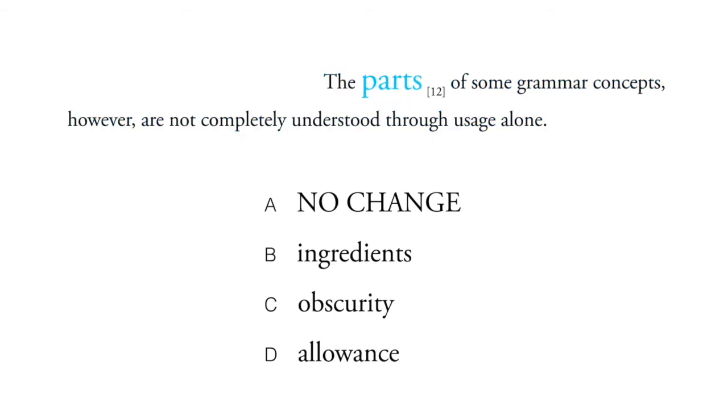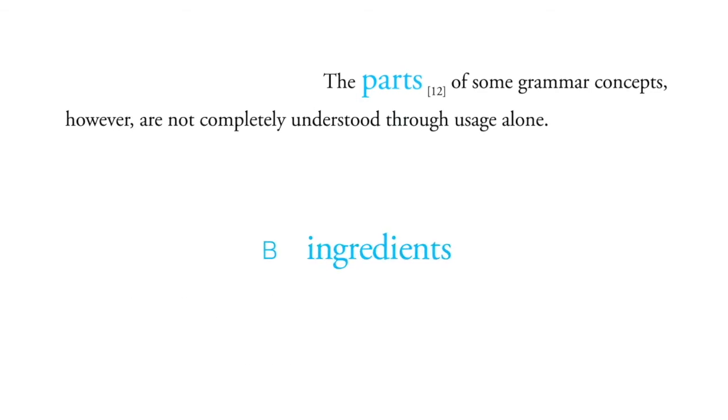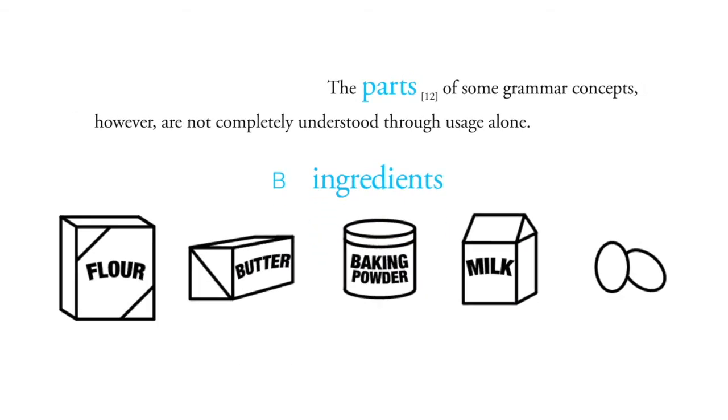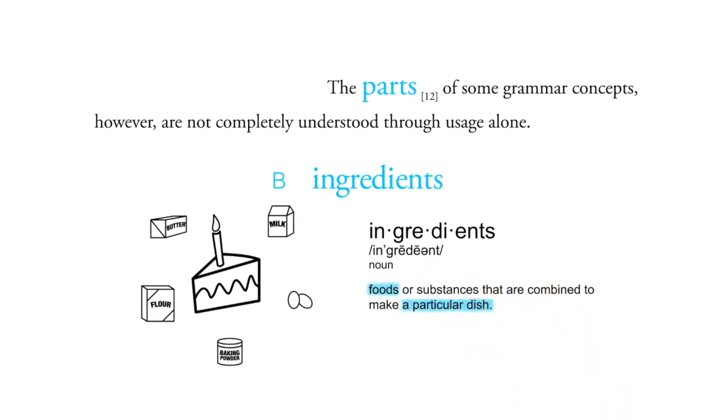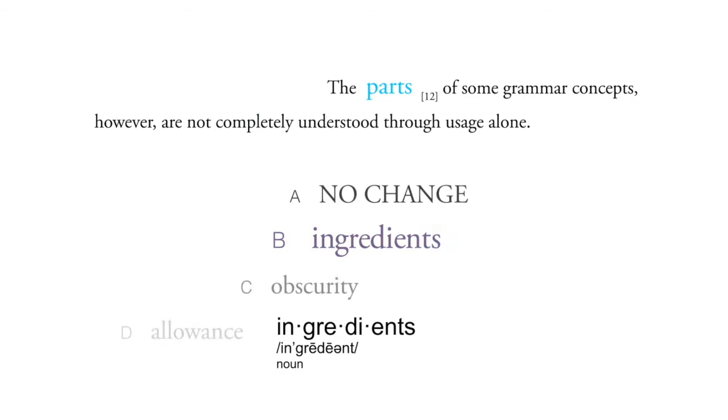Now you see how parts maybe lead you towards ingredients? The ingredients are parts. Yes, but they're specifically parts of food or recipes. So by exact meaning, B is out.